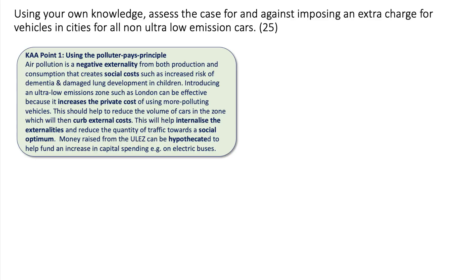Things like light vehicles, delivery vans, and motorcycle delivery riders — people just using their cars — create negative externalities. This generates social costs such as increased risk of dementia and damaged lung development in children. Introducing an ultra low emissions zone, such as London's, can be effective because it increases the private cost of using more polluting vehicles, reducing the number of cars in the zone and curbing external costs. The justification is that this helps to internalise the externalities and lower the quantity of traffic towards the social optimum. Money raised can also be hypothecated or ring-fenced to fund increased capital spending, for example on electric buses — a classic 'make the polluter pay' argument.